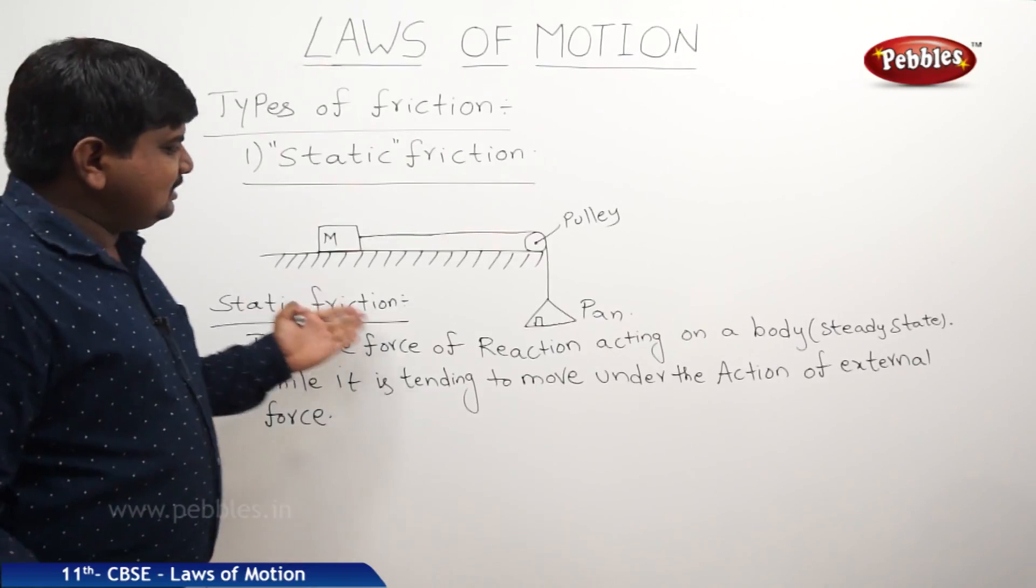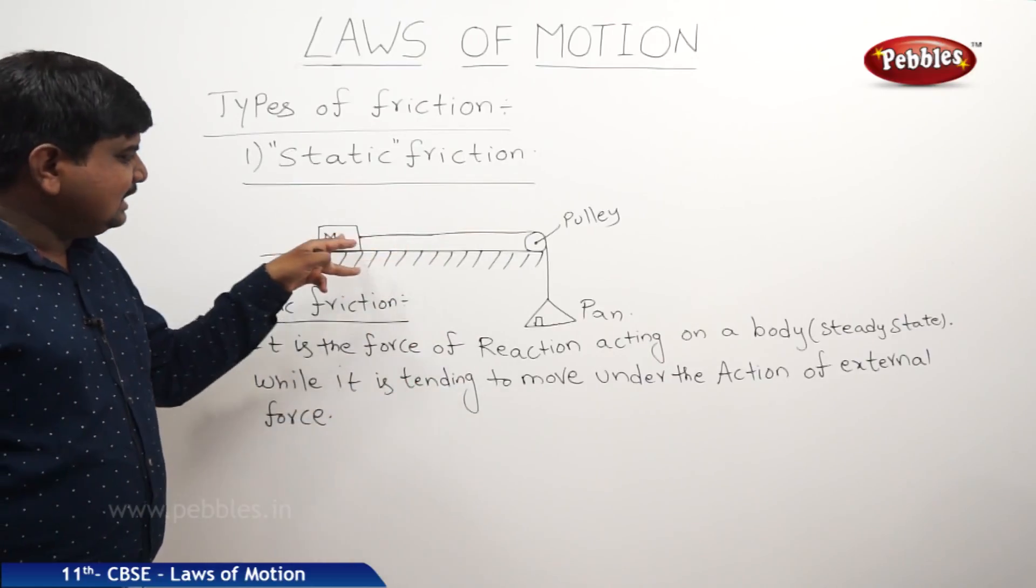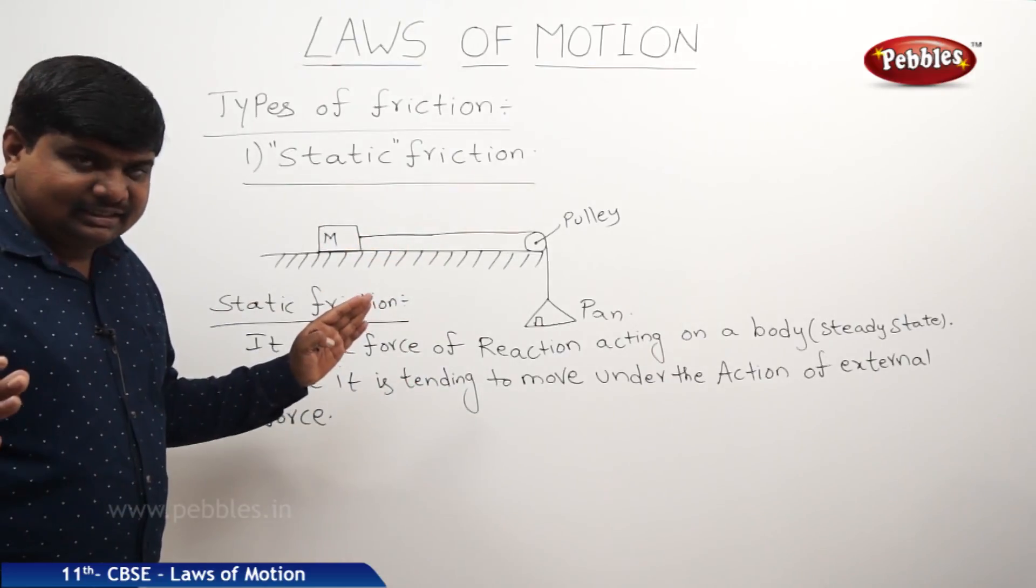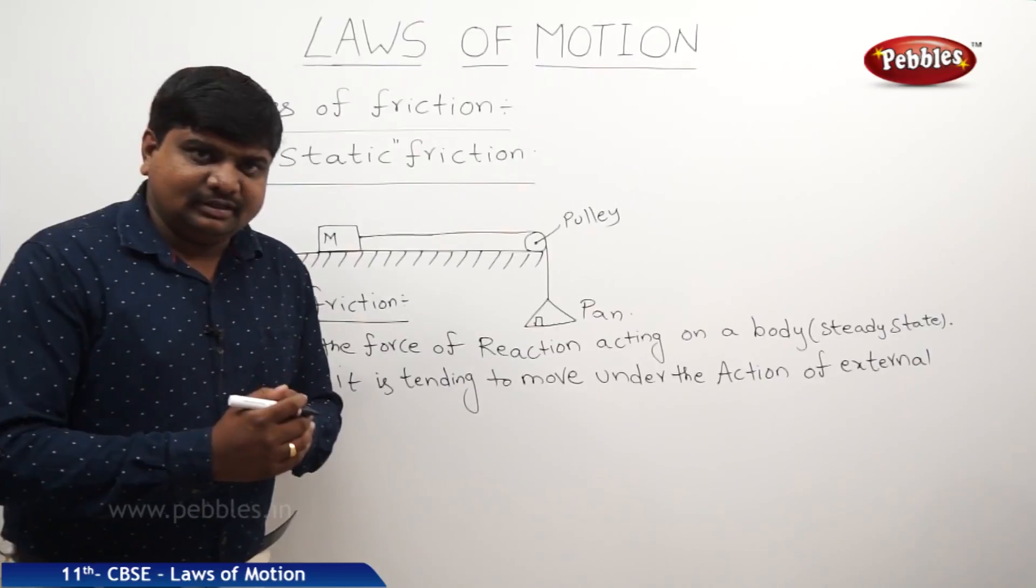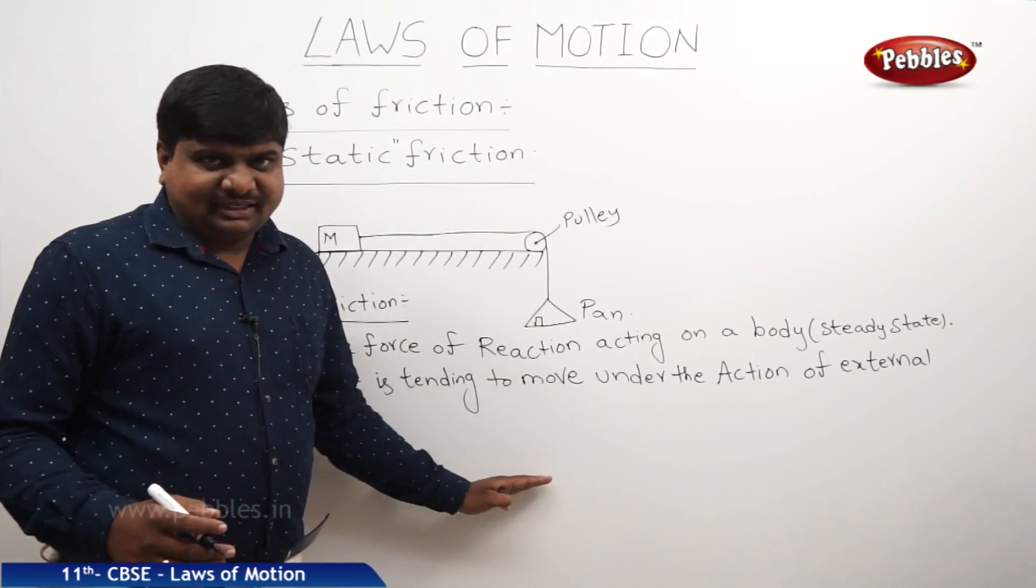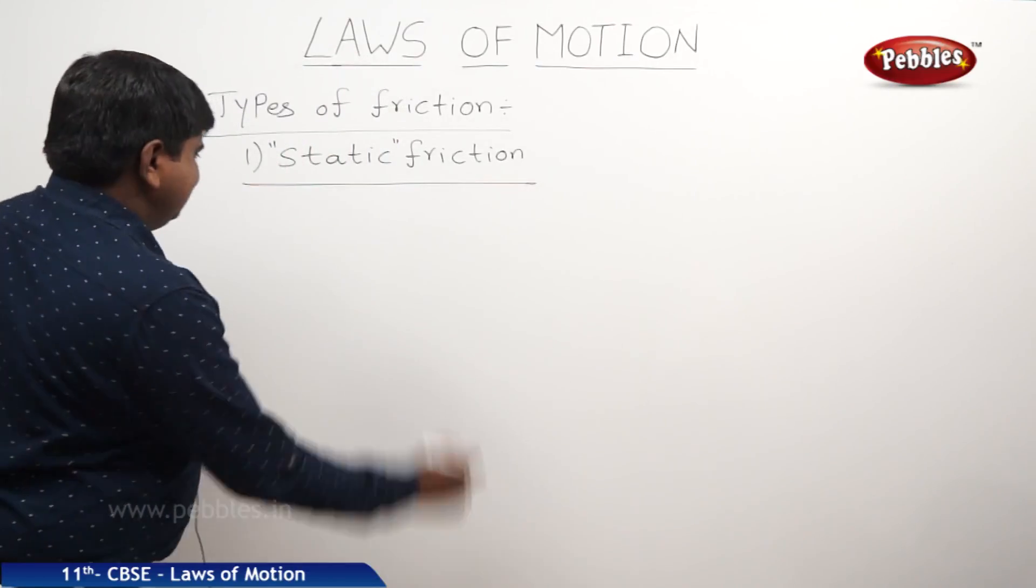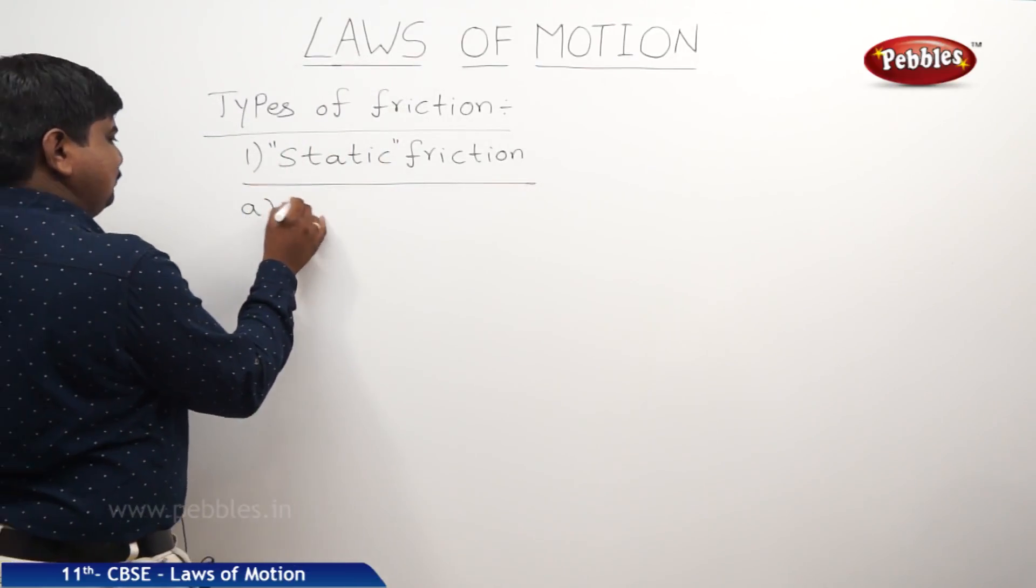This means an external force is applying on the body to move it but a self-adjusting force is keeping the body in steady state. This is called static friction. There are many laws about the static friction. What are those? So what are the laws of static friction? It is a self-adjusting force.